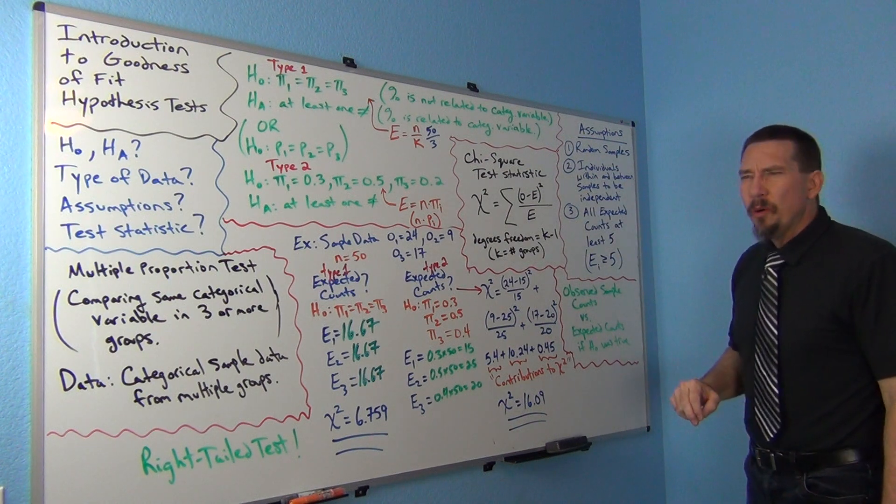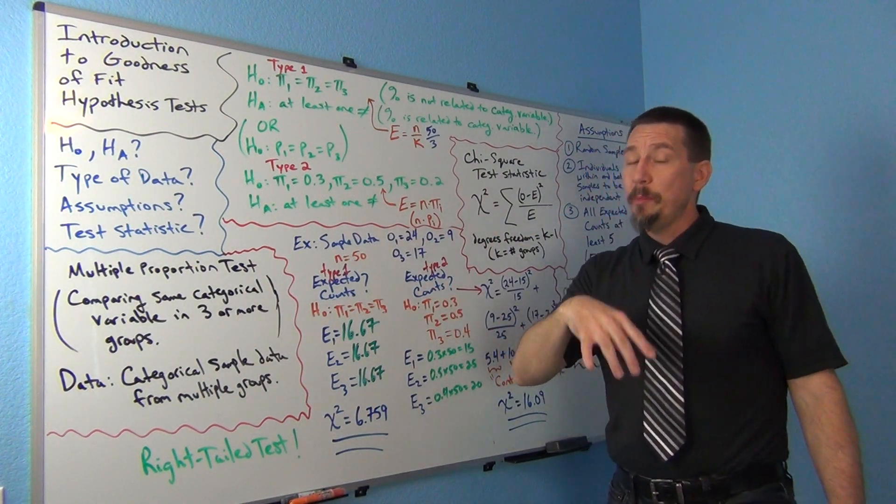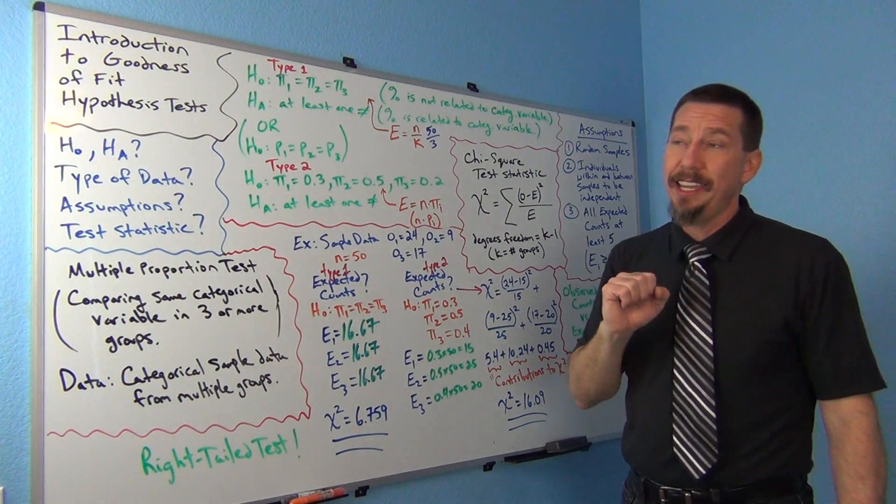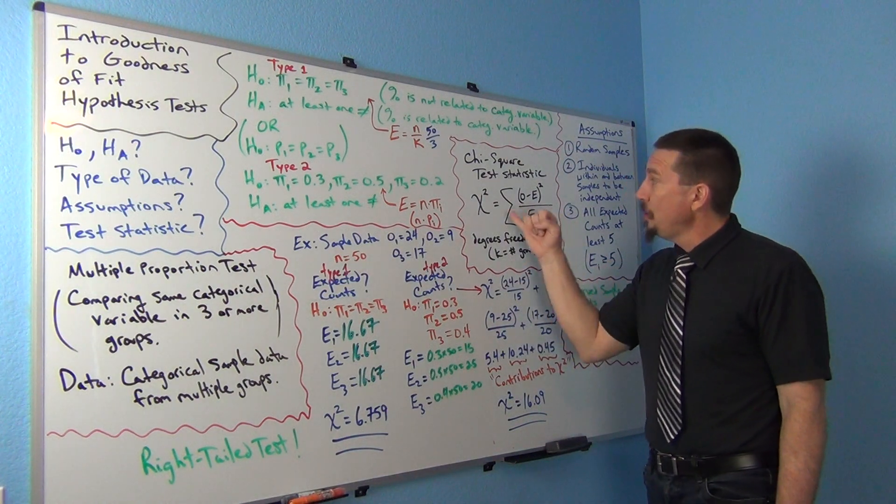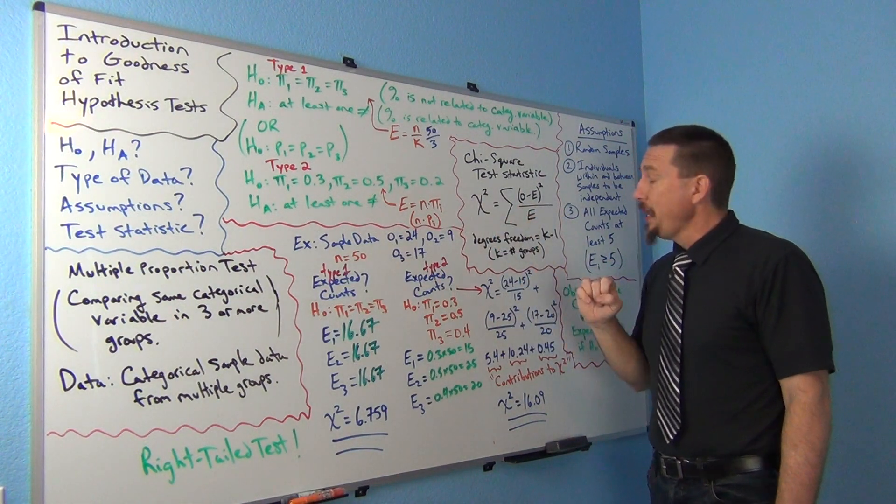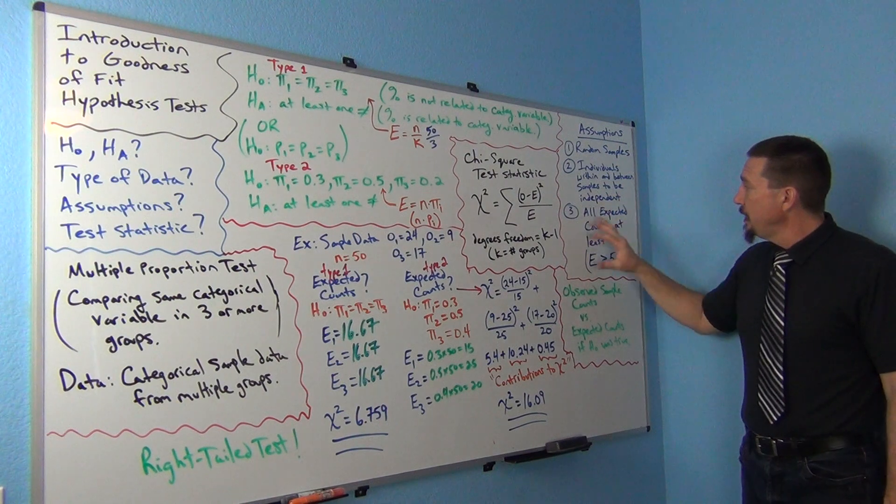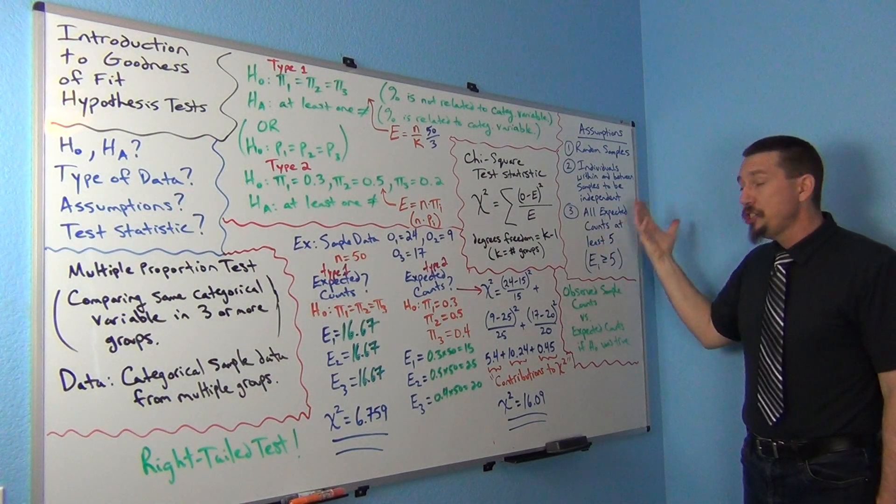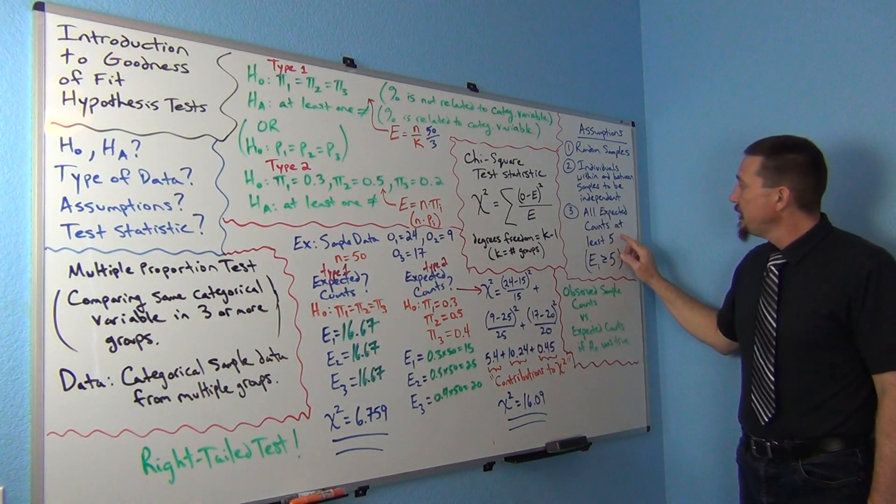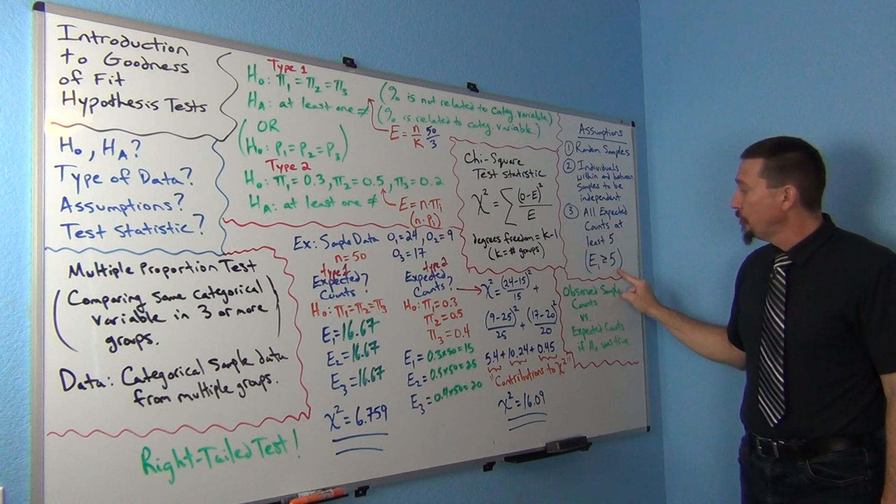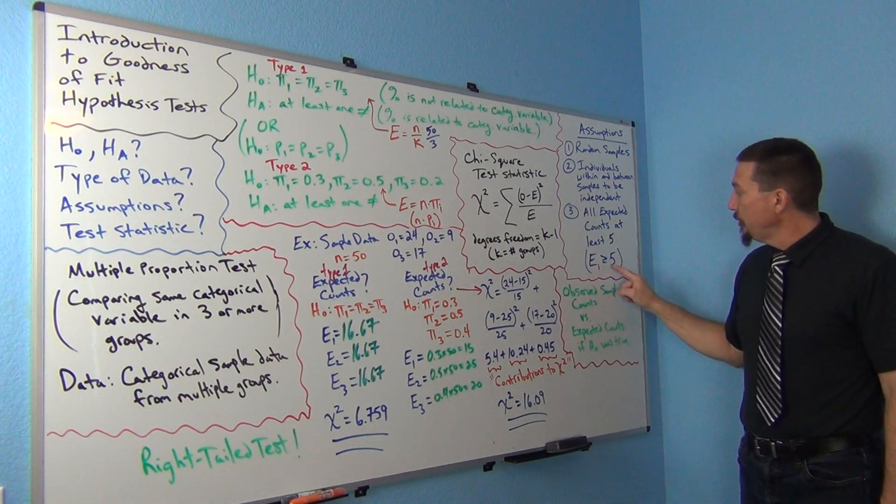Now remember in two population proportion we wanted 10 successes and 10 failures, but that was when you're using the z-score test statistic. When we looked at sampling distributions for proportions, this is now focusing in on chi-square. So we have a different distribution now. To make sure that this is going to match up, to make sure your data set's large enough, we want all the expected counts to be at least five. So all the expected counts or expected frequencies should be five or greater. A lot of times in stat programs you'll see expected value must be greater than or equal to five.